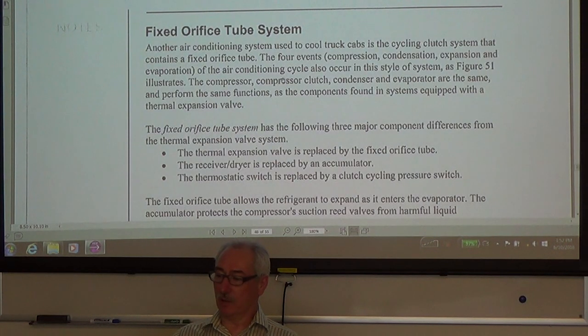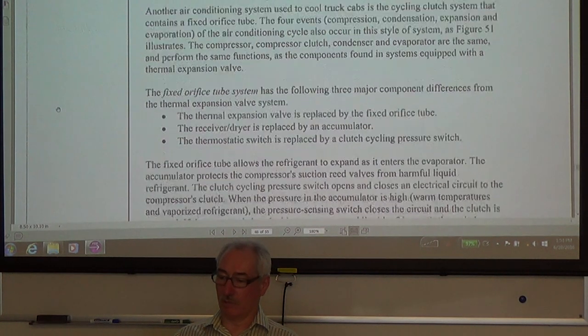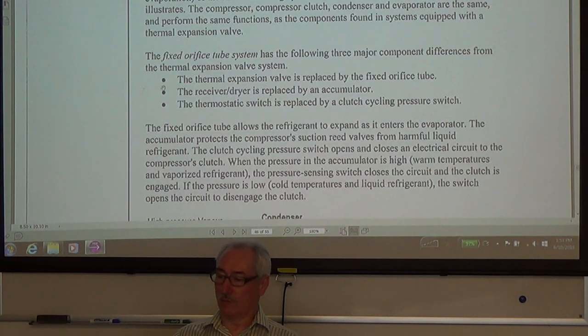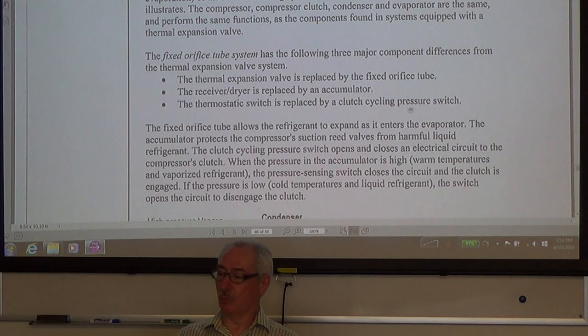The four events of the air conditioning cycle also occur in this style of system. The compressor, compressor clutch, condenser and evaporator are the same. They perform the same functions as the components found in the systems that use a thermal expansion valve. The fixed orifice tube system also has the following three major component differences from the thermal expansion valve system. The thermal expansion valve is replaced by the fixed orifice tube. The receiver dryer is replaced by an accumulator. And the thermostatic switch is replaced by a clutch cycling pressure switch.